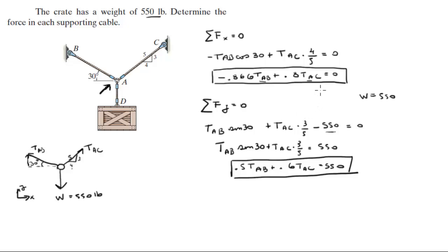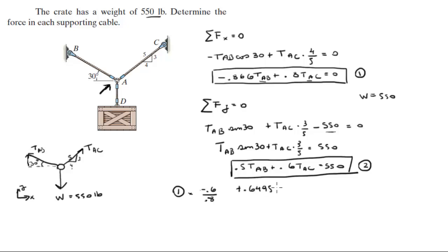Let's call the first equation Equation 1 and the second Equation 2. We're going to take Equation 1 and multiply it by negative 0.6 over 0.8 — this is all algebra, basically how to solve a system of two equations. By multiplying Equation 1 by negative 0.6/0.8, you get: positive 0.6495 × T_AB minus 0.6 × T_AC = 0.